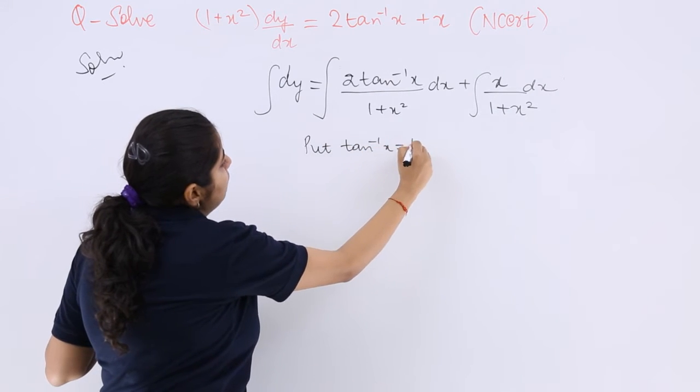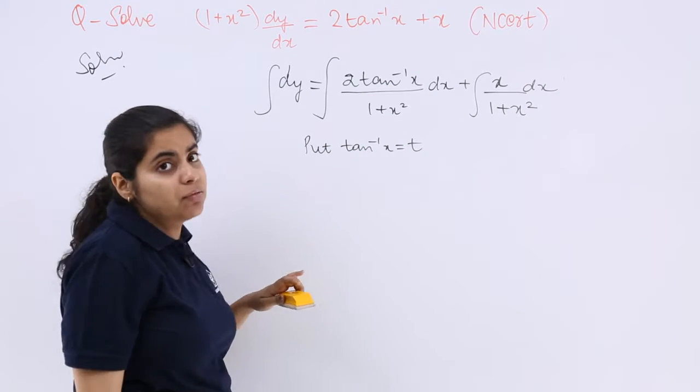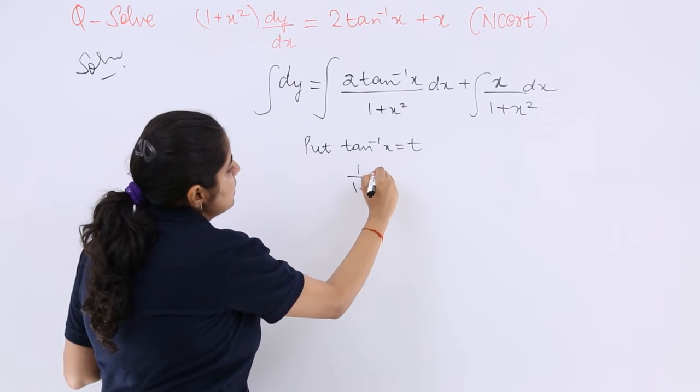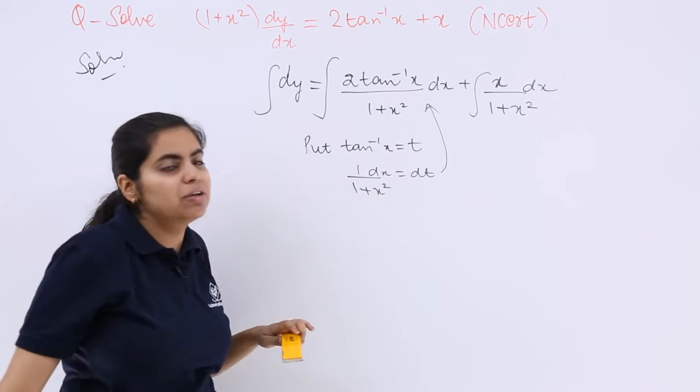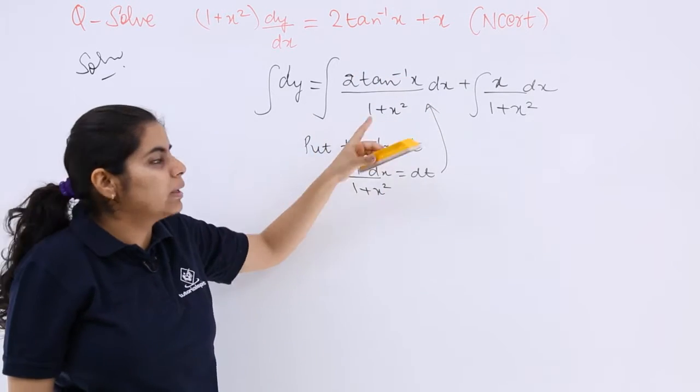Say I put tan⁻¹x = t. Then what will happen? 1/(1+x²)dx = dt. So that will give me some benefit here because there is 1/(1+x²).